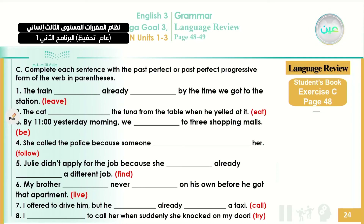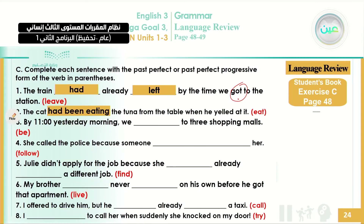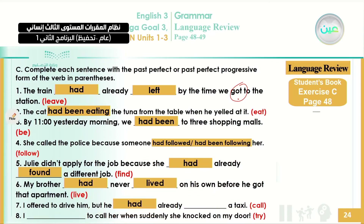Exercise C: complete sentences with the past perfect or past perfect progressive form. Number one: 'The train had already left by the time we got to the station.' Two actions — we got to the station, and before that the train had already left. Number two: 'The cat had been eating the tuna from the table when he yelled at it.' The cat was continuously eating — past perfect progressive — and then he yelled — the interrupting action. You can do the remaining examples yourself as practice.